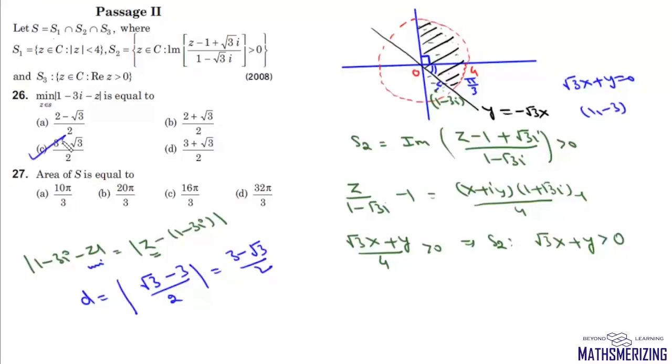Now question number 27: we need to find the area of this region. Area of this region S. Now this angle is π/2 plus π/3, so it will be 5π/6.